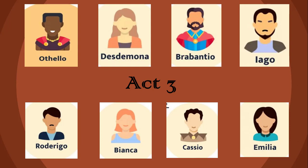Later, Cassio appears on stage and wonders about a handkerchief he found in his room. He is greeted by Bianca, a prostitute, and asks her to take the handkerchief and copy its embroidery. Cassio has no idea that the handkerchief belongs to Desdemona.